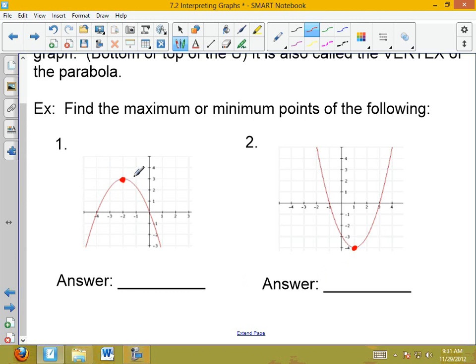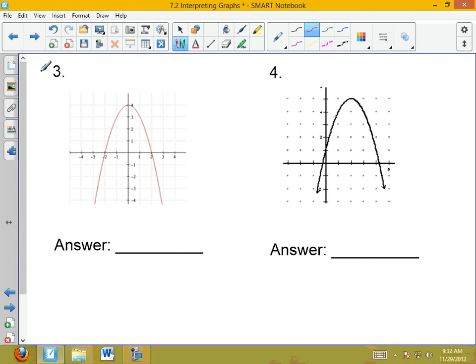To identify it, I have to put the ordered pair. I go across to negative 2 on the x-axis. I go up to 3 on the y-axis, so my ordered pair is (-2, 3). Here, I go over to 1 on the x-axis. I go down to negative 4 on the y. That's how I identify the maximum or the minimum point. 3 and 4 you should be able to do on your own.